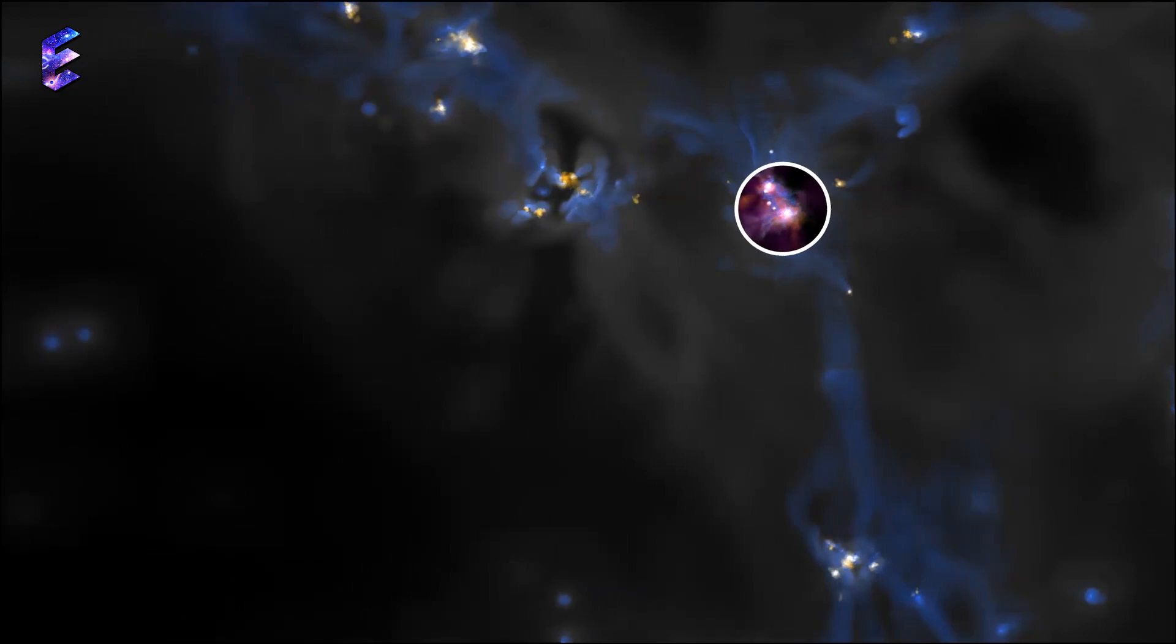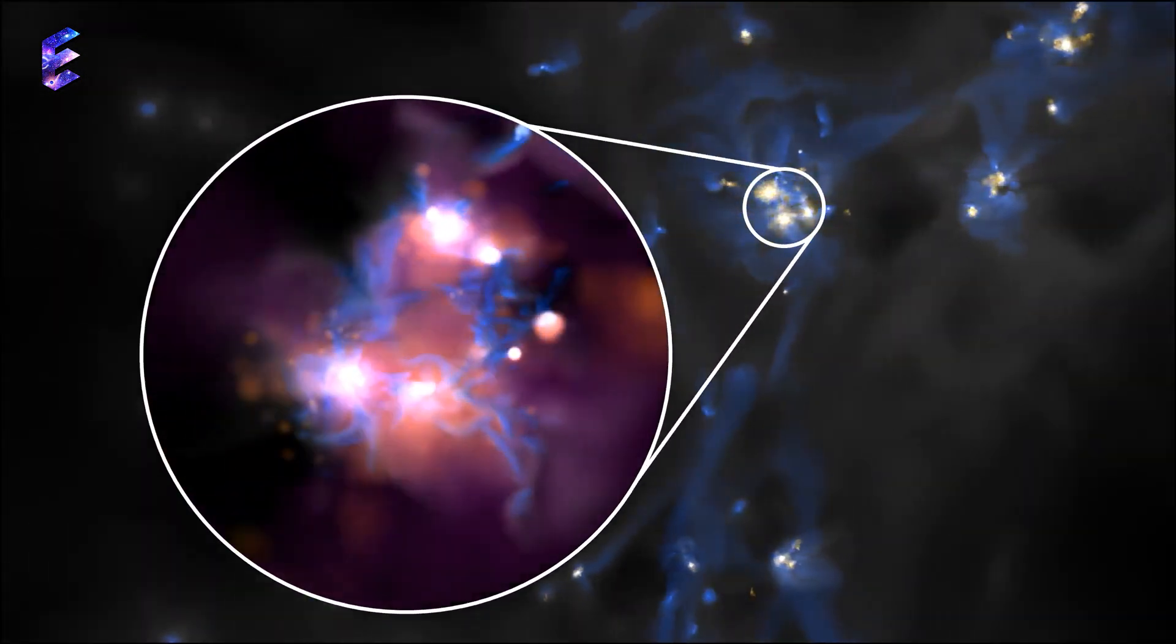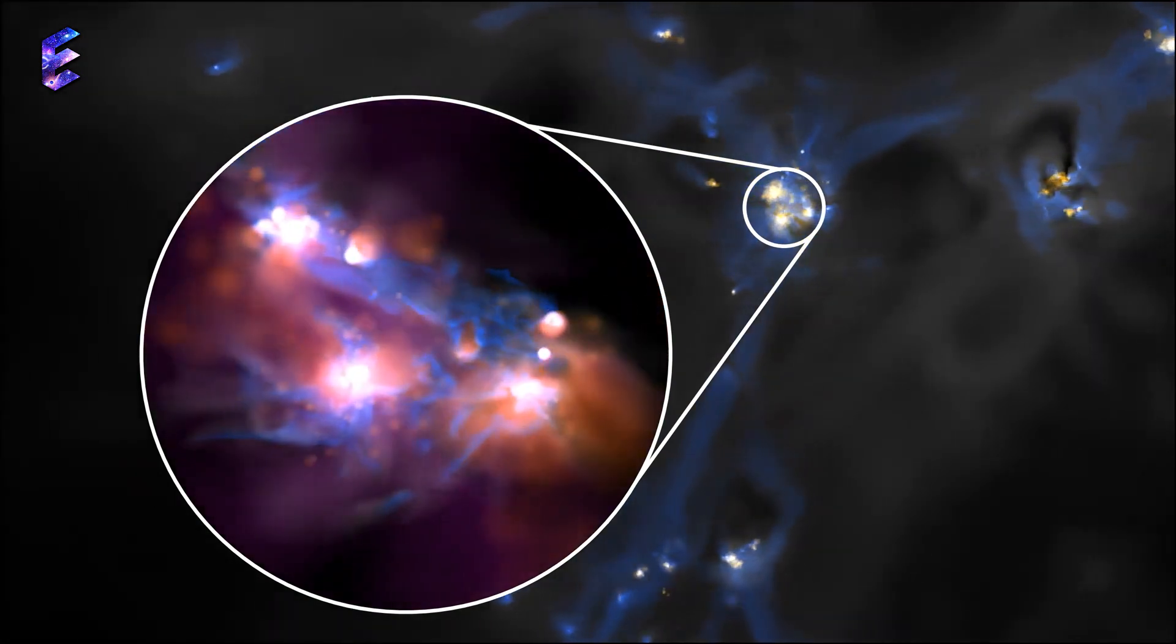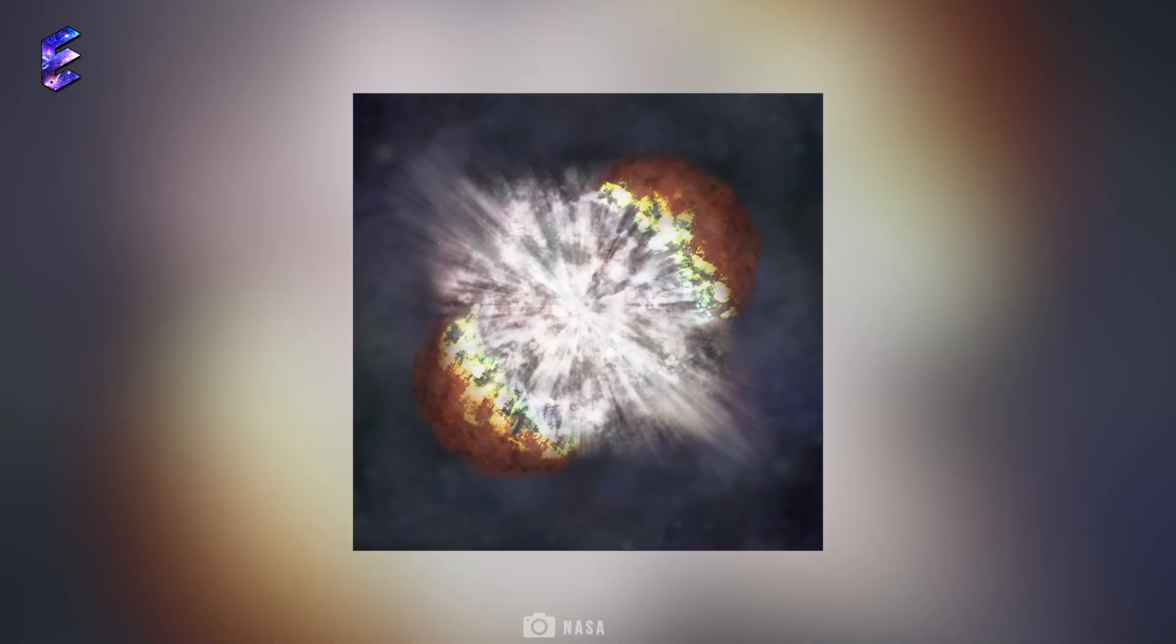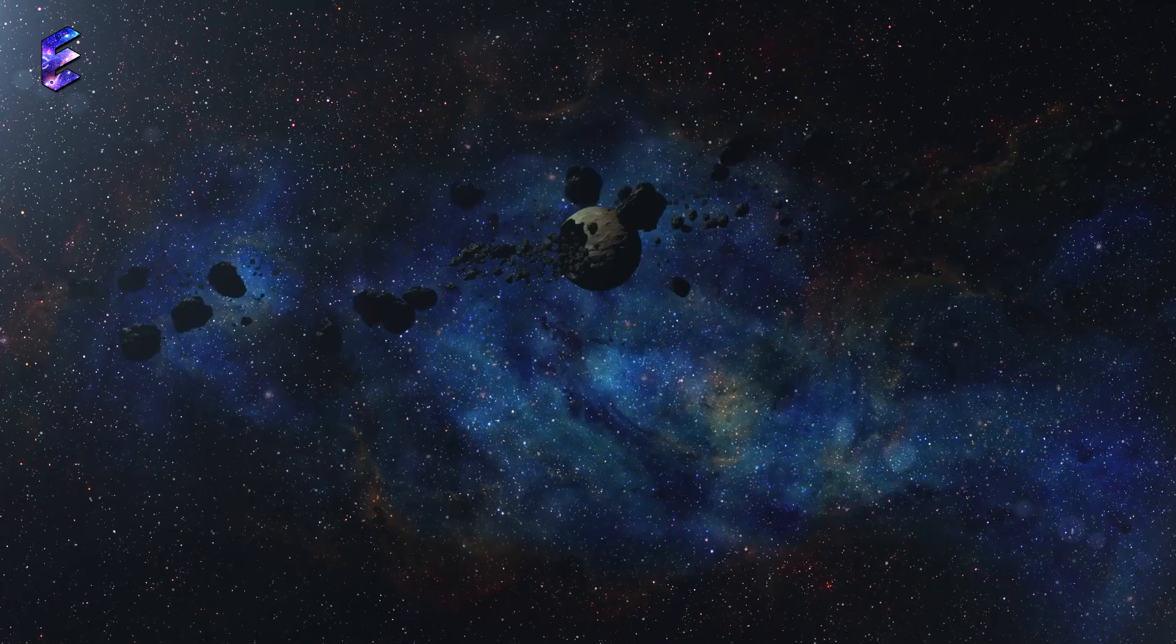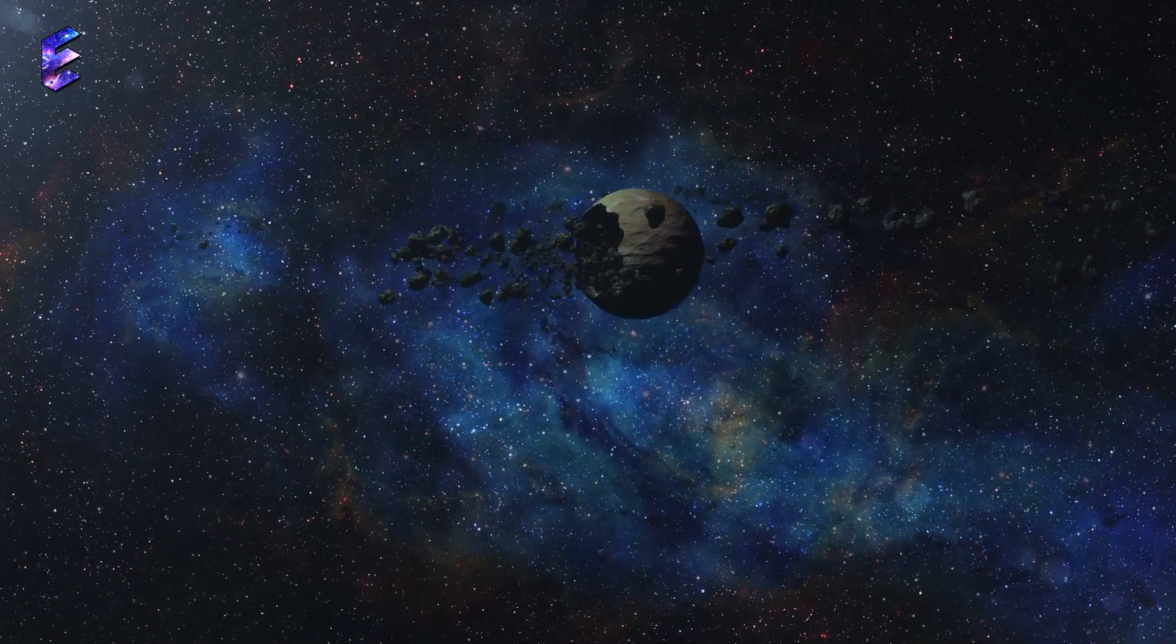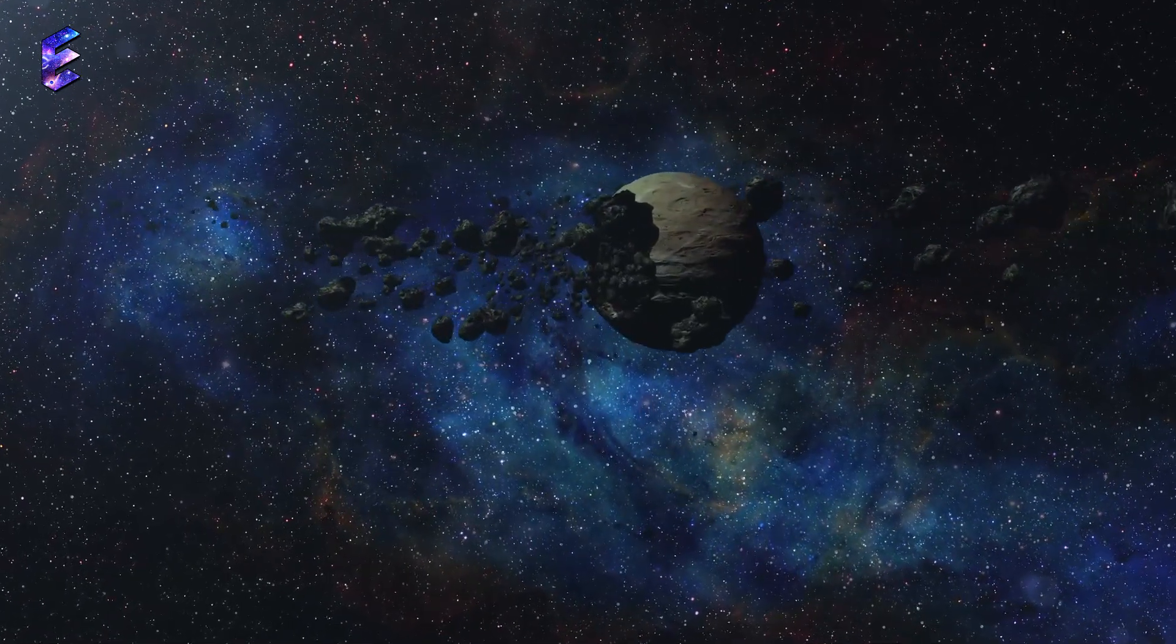The researchers believe that the black hole may be harming its development due to some of the gas it throws out into the galaxy, like a hurricane. This can lead to a cease in the formation of the star. Well, if that happens, this black hole will deprive the galaxy of life and even sabotage its food source.